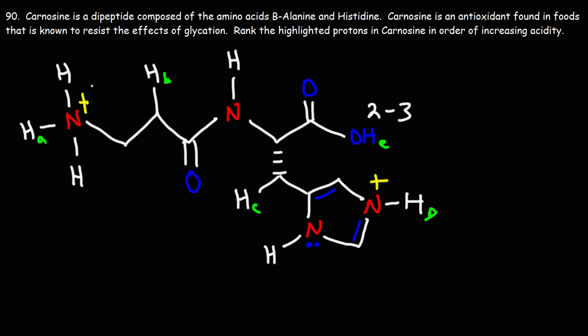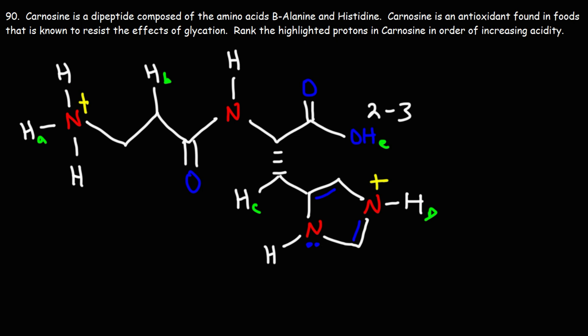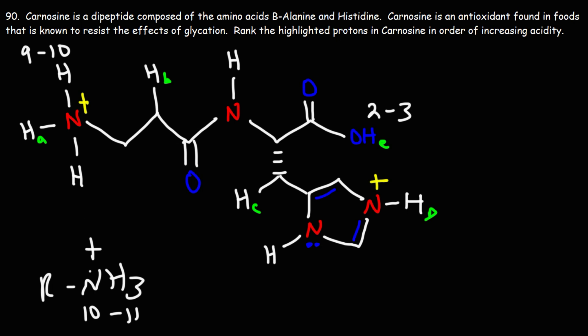The amino group of an amino acid — what's the pKa for that? The pKa for most protonated amines is usually around 10, sometimes 10 to 11, but in the context of an amino acid it's a little bit less, like nine to ten. So if you were to put 10, that's a good ballpark.